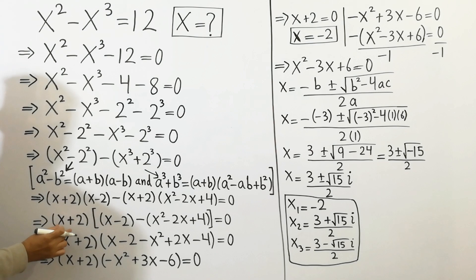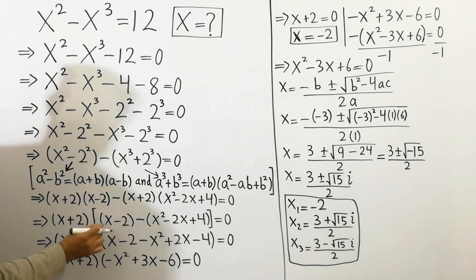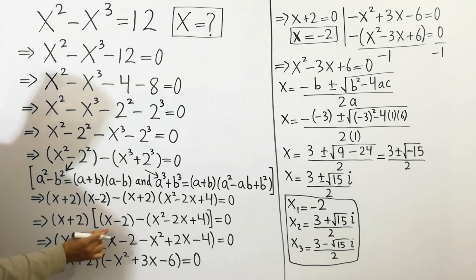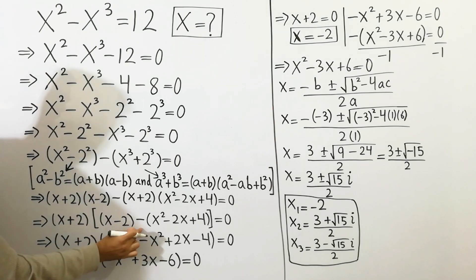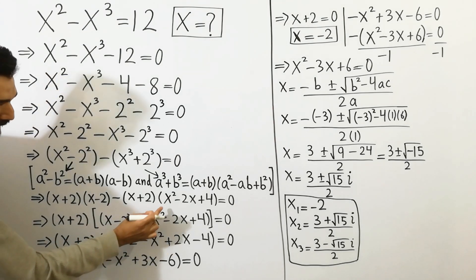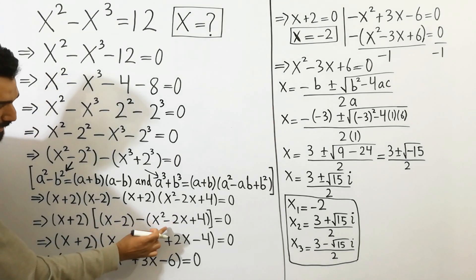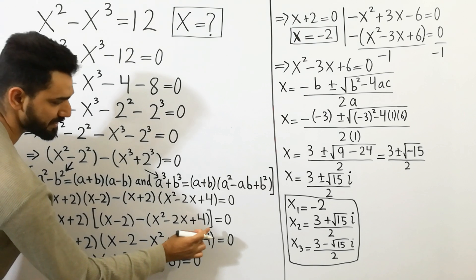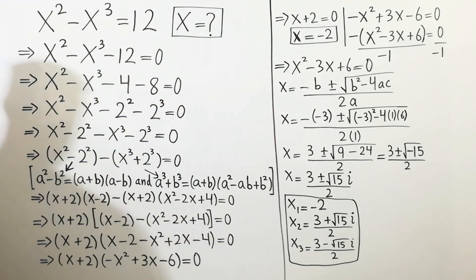And next, x plus 2 bracket — by taking the common value of (x+2) we get x minus 2, minus bracket x squared minus 2x plus 4, is equal to 0.